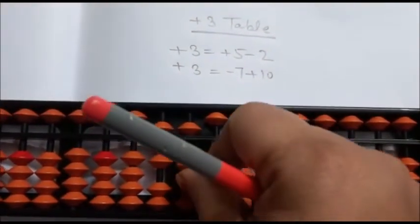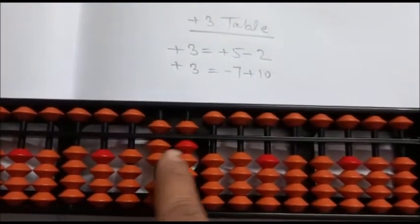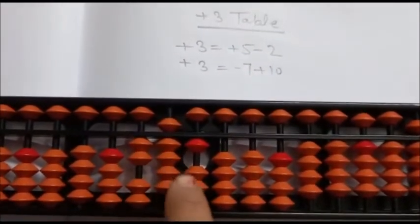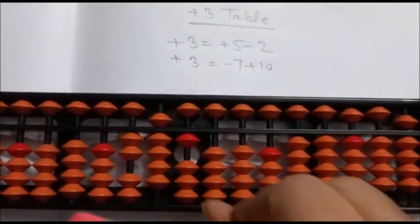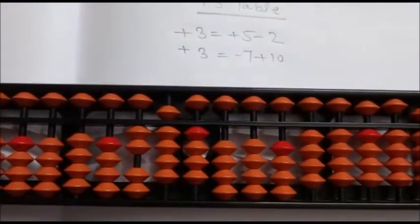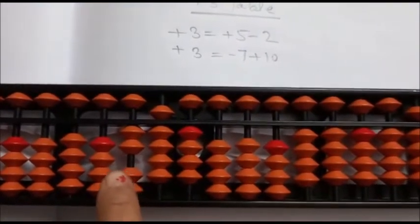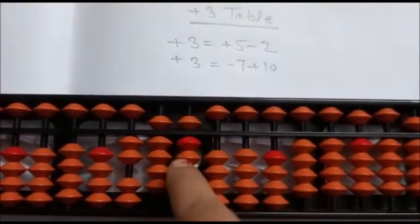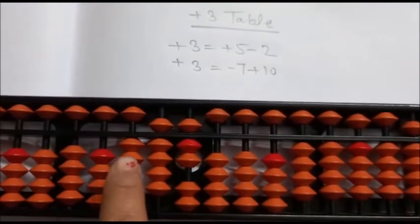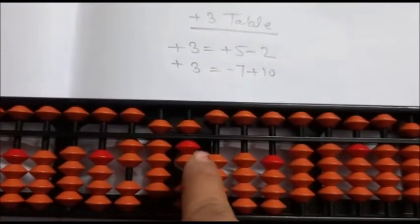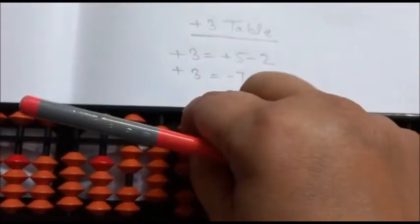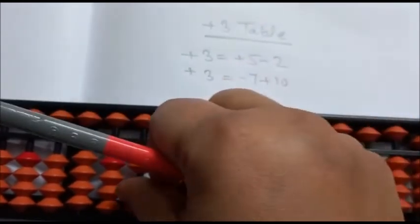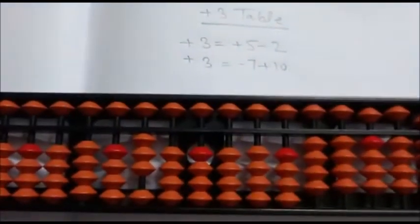Next is minus 7 plus 10 — answer is 72. Plus 5 minus 2 — answer is 75. Plus 3 is direct — answer is 78. Now 291: again plus 3 is direct — answer is 294. Again, plus 3: plus 5 minus 2 — answer is 297.